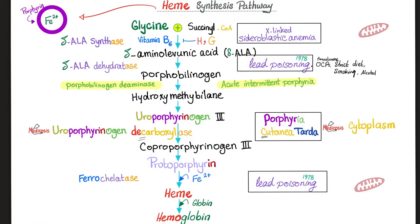Then I have uroporphyrinogen III. By uroporphyrinogen decarboxylase — removing carbon dioxide — I get coproporphyrinogen III. This enzyme is missing in today's disease, porphyria cutanea tarda. Then coproporphyrinogen III will become protoporphyrin — that's the rim. Join the rim with the core and you have the wheel. Join the heme with the globin and you have hemoglobin. The enzyme ferrochelatase chelates the iron — removes the iron from your system and puts it into something useful, like your hemoglobin molecule.